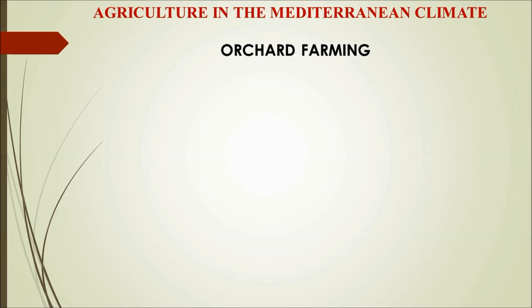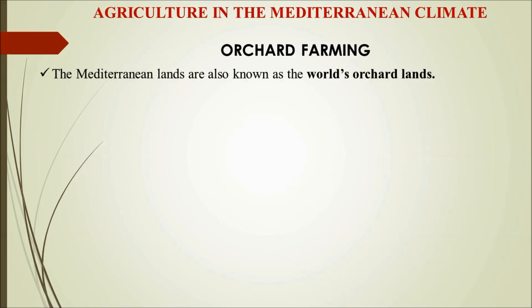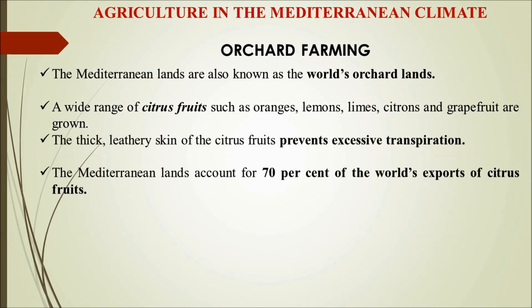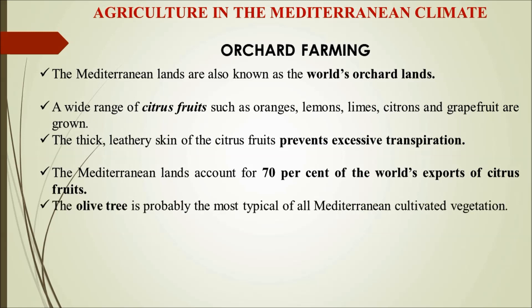The main thrust of Mediterranean agriculture is horticulture — orchard farming. Mediterranean lands are also known as the world's orchard lands. A wide range of citrus fruits like oranges, lemons, limes, citrons, and grapefruit are grown here. Citrus fruits have thick leathery skin to prevent excessive transpiration and moisture loss. Mediterranean lands account for 70% of the world's export of citrus fruits. The olive tree is probably the most typical of Mediterranean cultivated vegetation, with olive oil used for cooking and medicinal purposes.